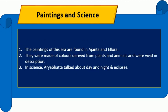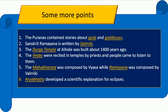The paintings of this era are found in Ajanta and Ellora. They were made of colors derived from plants and animals and were vivid in description. In the field of science, Aryabhata talked about day and night and eclipses.